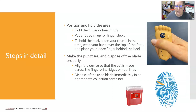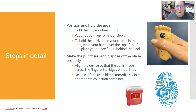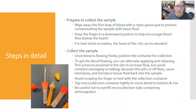Position and hold the area firmly — for finger sticks, place the patient's palm up and hold the finger; for heel sticks, place your thumb in the arch, wrap your hand over the top of the foot, and place your index finger behind the heel, as demonstrated on the model foot here. Then make the puncture, aligning the device so the cut is made across the fingerprint ridges or heel lines, and immediately dispose of the used blade in a sharps container.